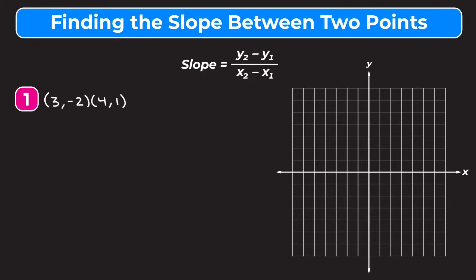This equation will make more sense once we go through an example problem. For number one we're going to find the slope using a graph. I'm going to start by plotting these two points: the point (3, -2) and the point (4, 1). I'll go 1, 2, 3 over and negative 1, negative 2 down for the first point, then over to 4 and up to 1 for the second point.